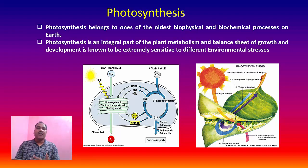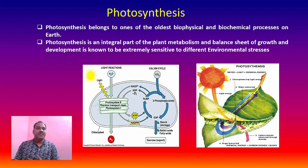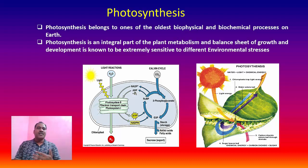In the light reaction, when light energy falls on the chlorophyll molecules, it is converted into chemical potential energy — that is ATP and NADPH — which is used for the conversion of carbon dioxide into carbohydrates in the presence of water. Photosynthesis is an integral part of plant metabolism and the balance sheet of growth and development, and is known to be sensitive to different types of environmental stresses.